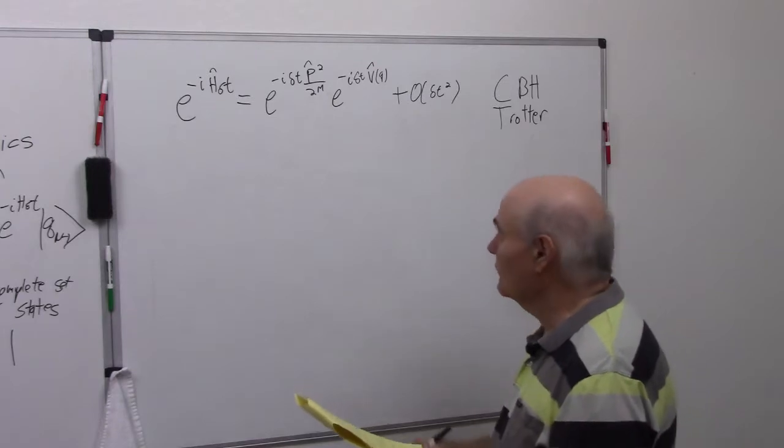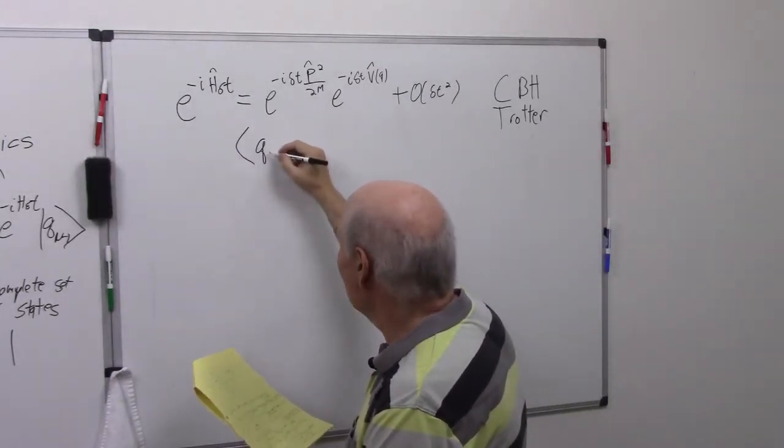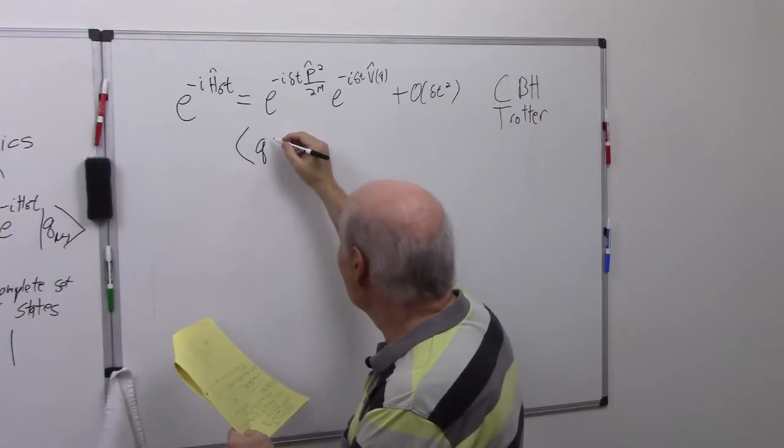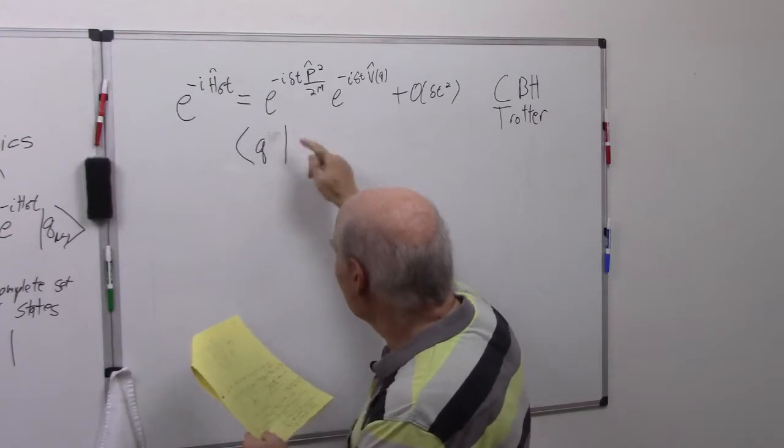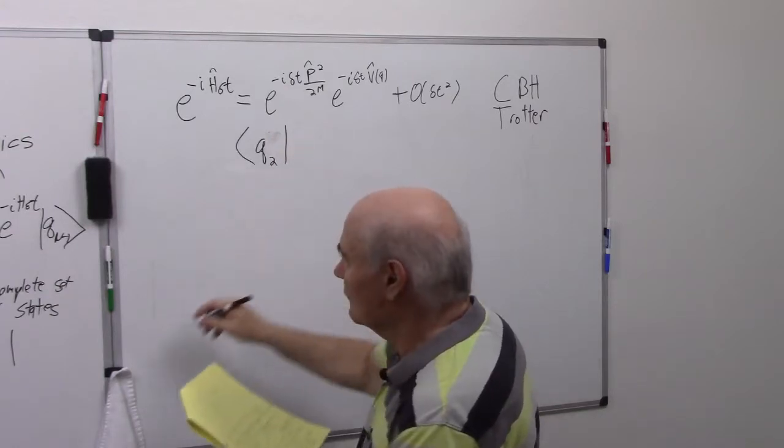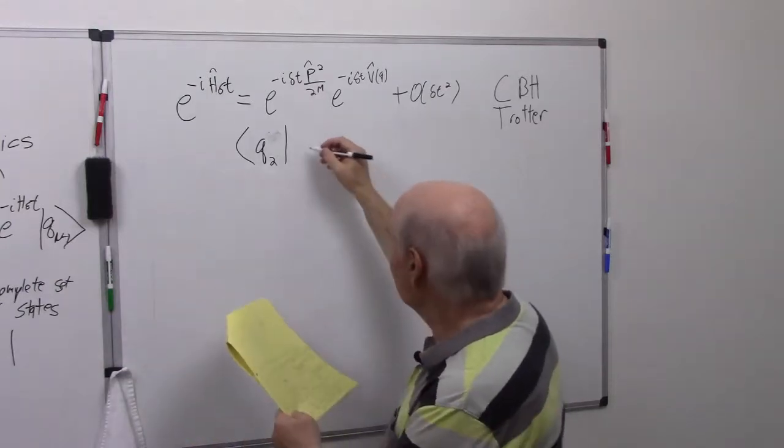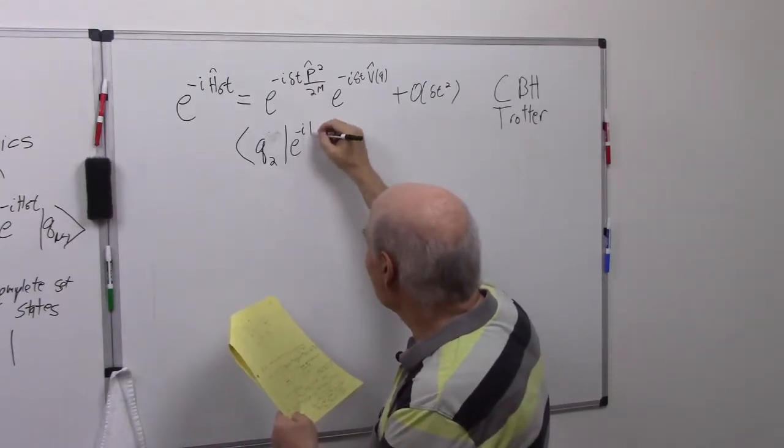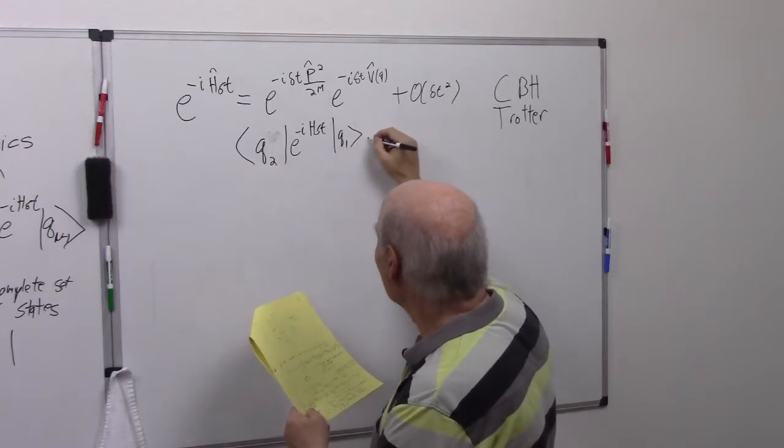So just to show you how this works out, if I have q double prime, let's just say I have q2 because I'm just going to do one of these factors here. q2 e to the minus i h delta t q1 is equal to...